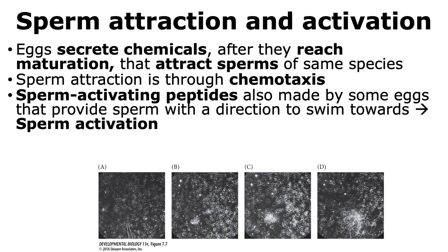In addition to chemicals that attract sperms, there are also sperm-activating peptides that can be made by some eggs. These provide the sperm with the direction to swim towards and thereby activate the motility of the sperm. Here is an example where we can observe both sperm attraction and sperm activation. In this figure, panel A in the blue box is showing many sperms that are uniformly dispersed in the field of view. A very tiny drop of a chemical that acts as both a sperm-attractive molecule and a sperm-activating peptide is then added.